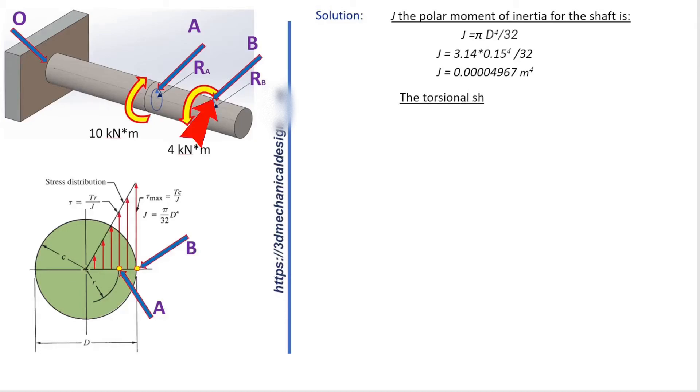The torsional shear stress at point B: Tau B equals TB times C divided by J. CB, distance from center to point B, equals 0.075 meters.